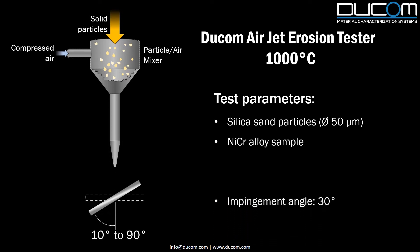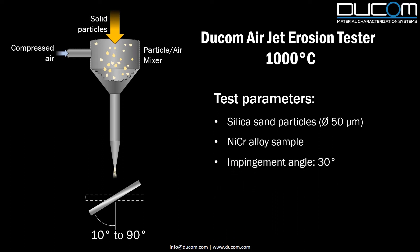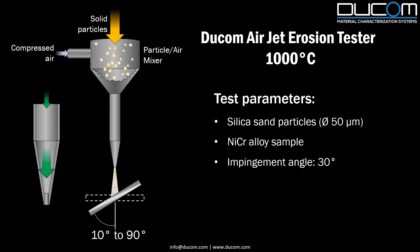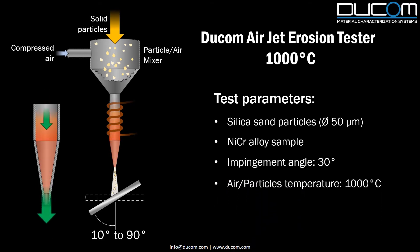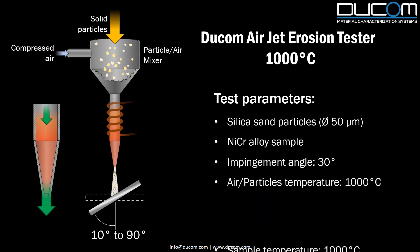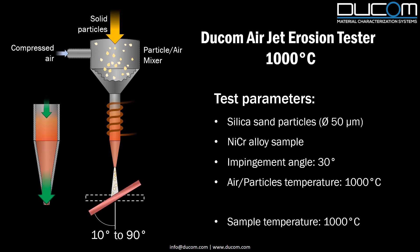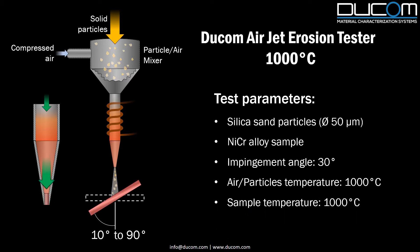A heat-resistant alumina nozzle with a smaller diameter compared with the tube was used such that it will create an energy flux of silica particles. These particles at 1000 degrees Celsius impact at an angle of 30 degrees with the nickel-chromium alloy, which was also heated to 1000 degrees Celsius.